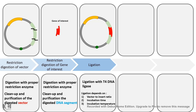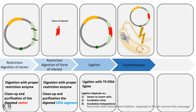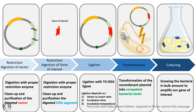The next important step is ligation, where T4 DNA ligase is used. Ligation efficiency depends upon the vector-to-insert ratio, incubation time, and incubation temperature. Once ligation is confirmed, we can insert the plasmid along with our gene of interest inside the bacteria by a process known as transformation — by giving them a heat shock, the bacteria takes up the plasmid. After transformation, we give the bacteria a proper culture media where it can grow in number, and as it grows, our gene of interest inside the plasmid also grows.